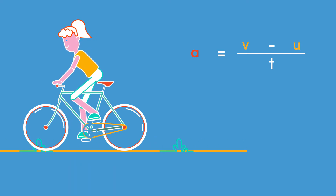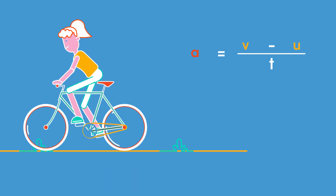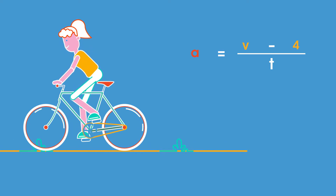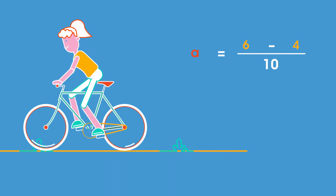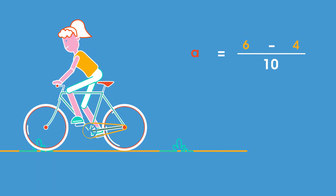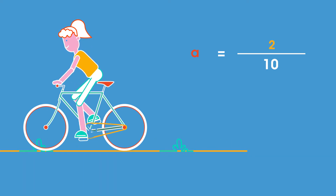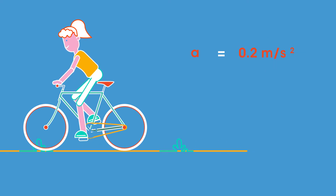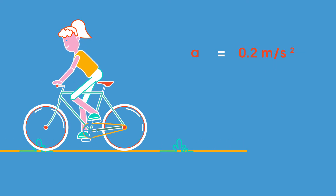For example, if a cyclist goes from 4 meters per second to 6 meters per second in 10 seconds, then her acceleration will be 2 meters per second per 10 seconds, or 0.2 meters per second per second.